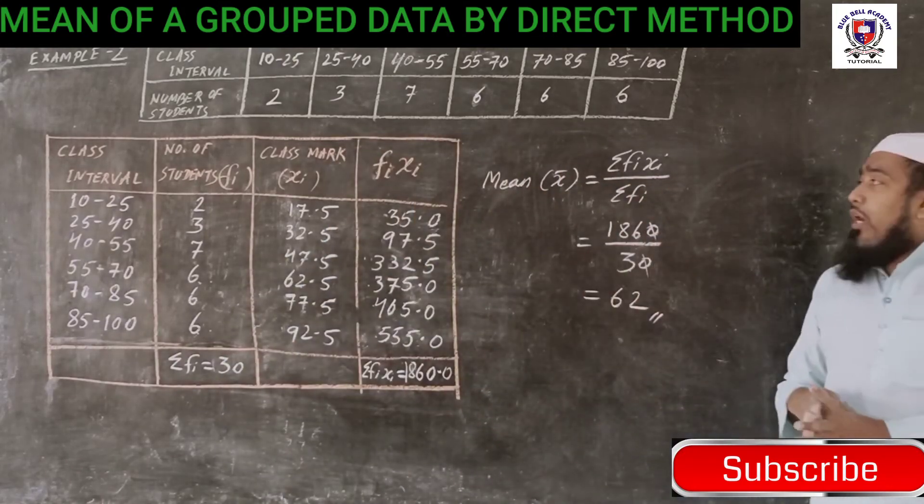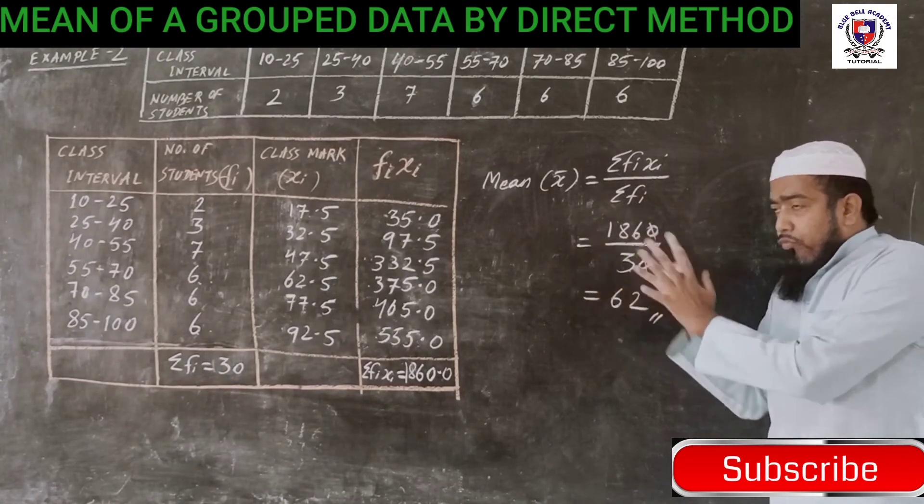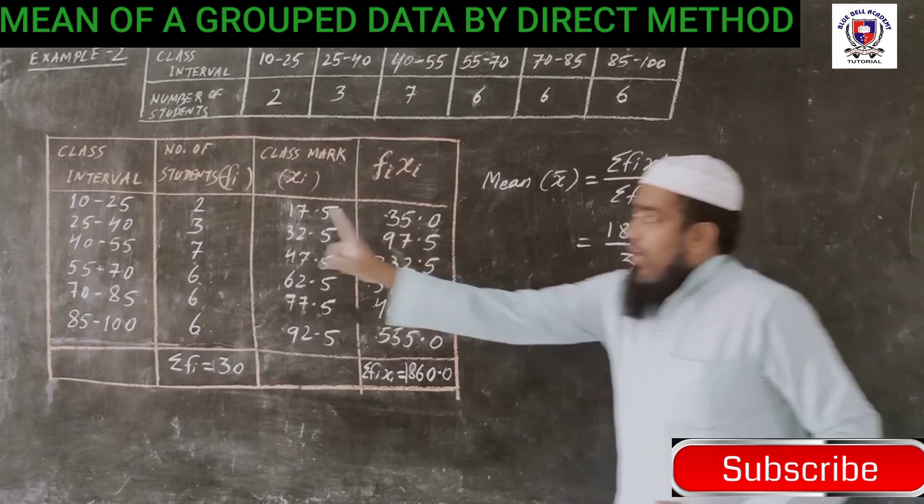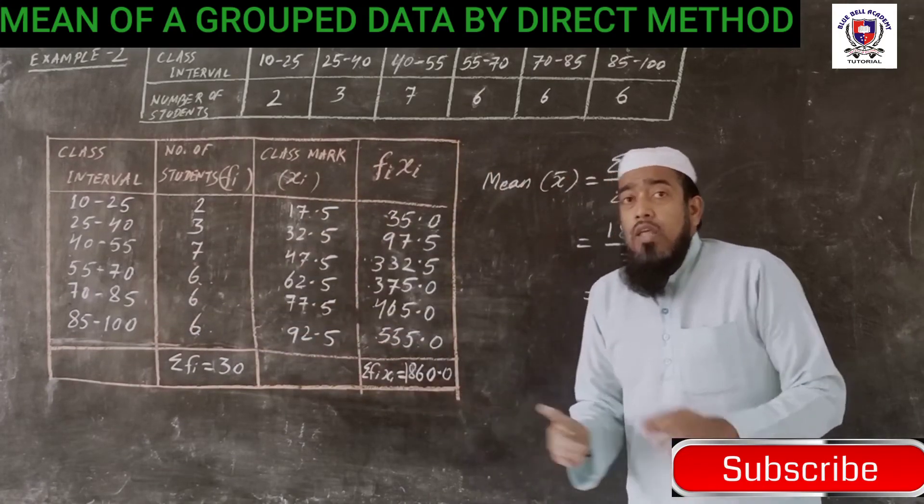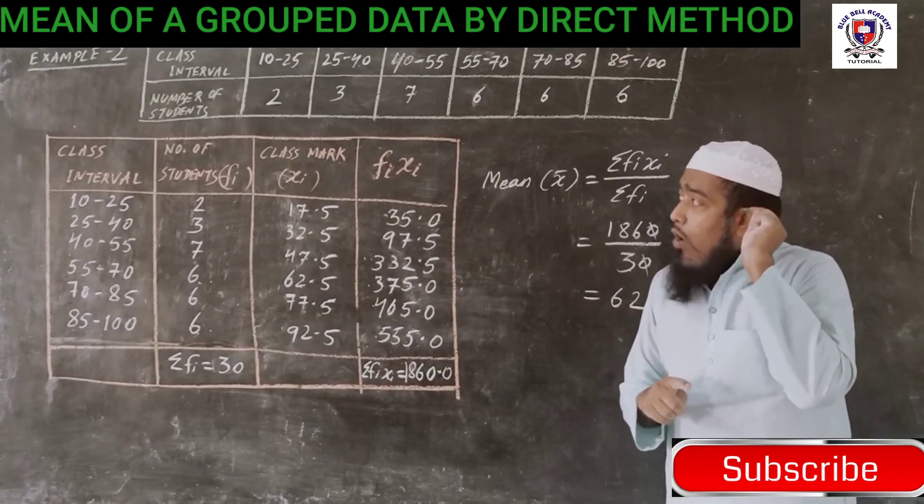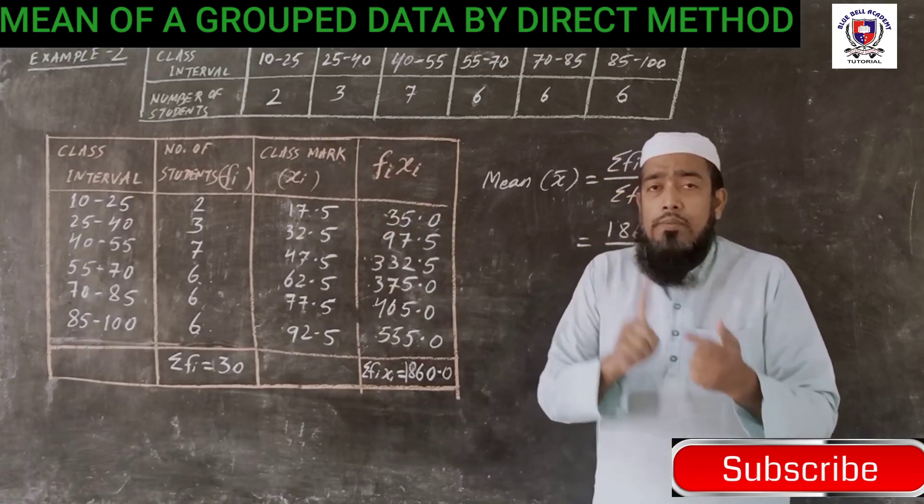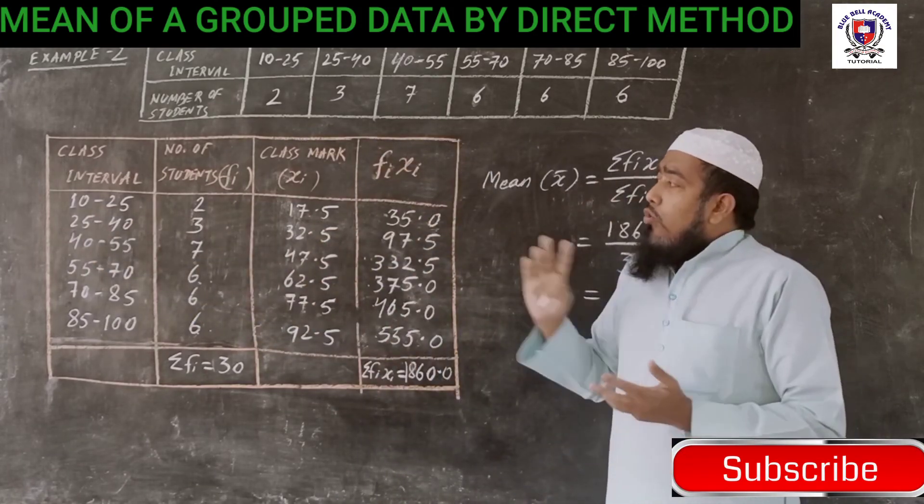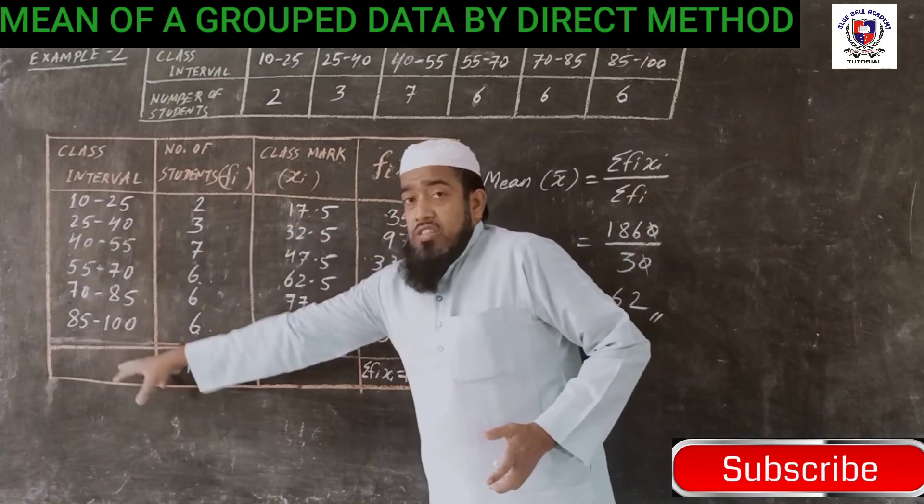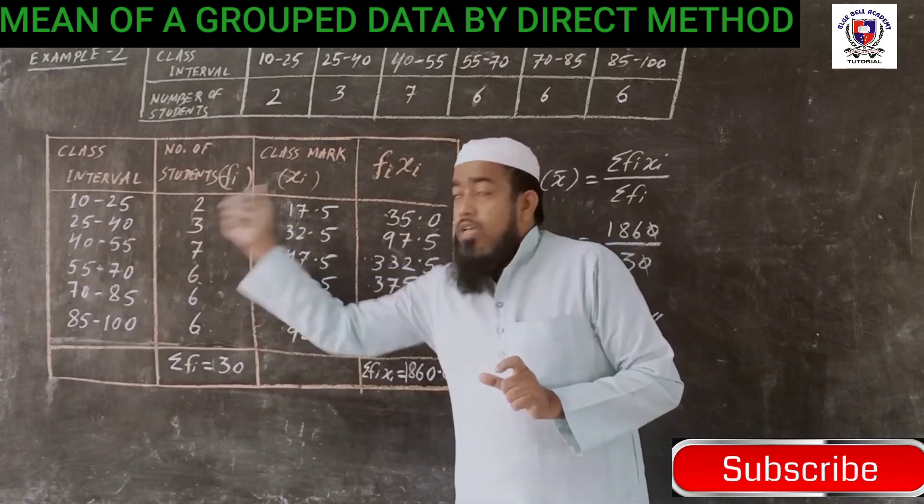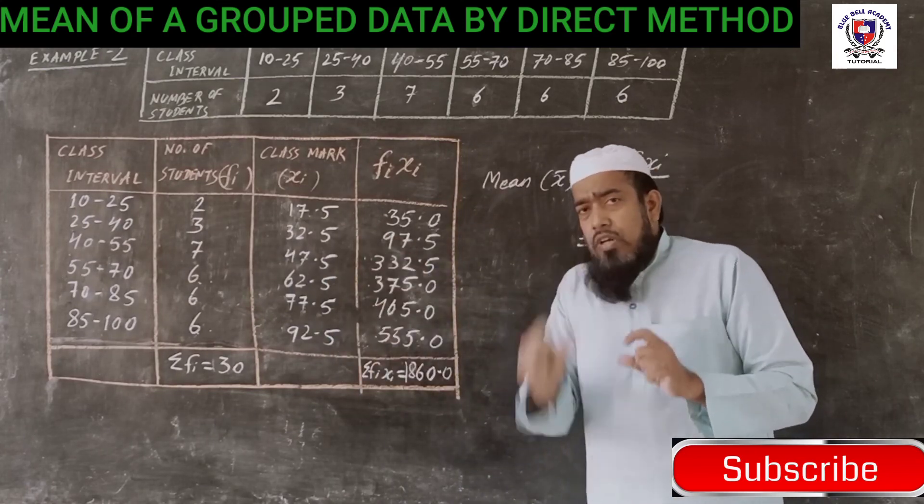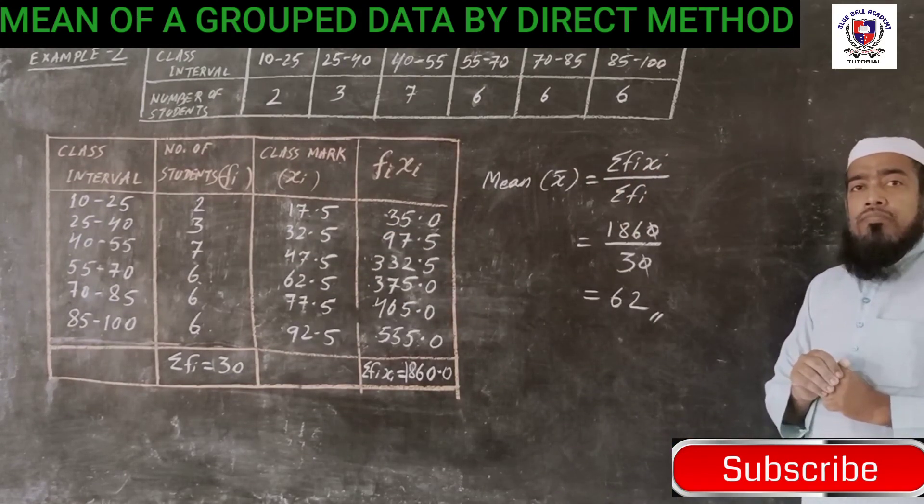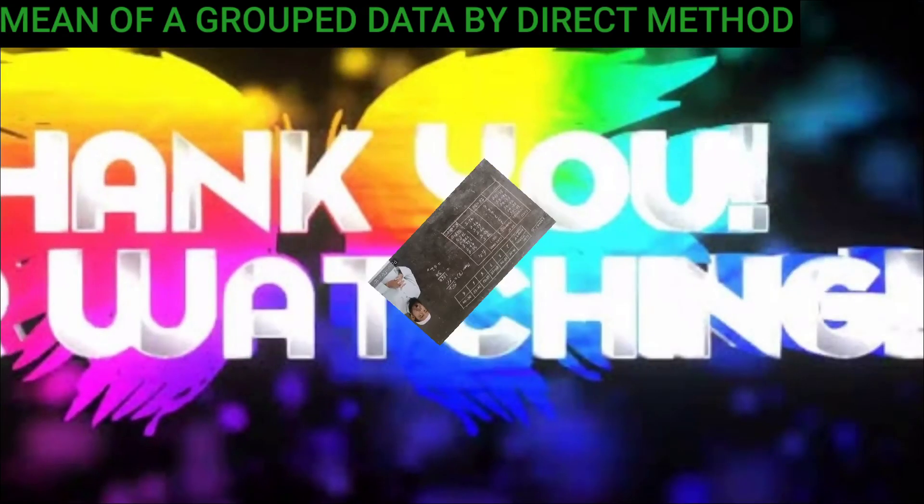This is the way to find the mean of grouped data. As I told, the difference is: class interval is there, we have to find out the class mark. Another technique I taught you is how to find this class mark easily. Once again I am explaining, don't add and divide by 2, it will take a lot of time. The technique I taught you: take the class size difference, divide it by 2, and whatever value you get, add it to the lower limits and write. Is that clear? Hope all of you understood this. Thank you very much.